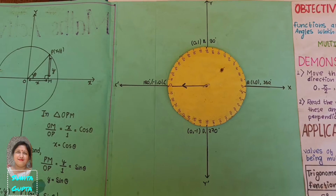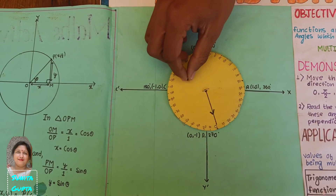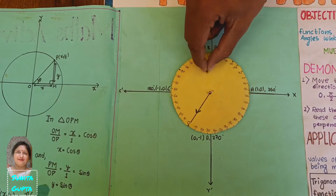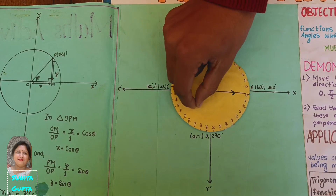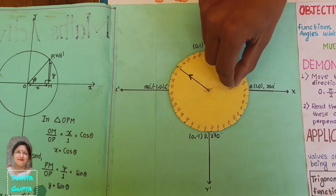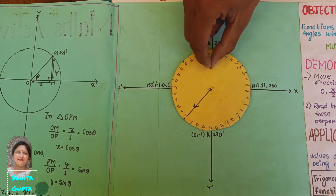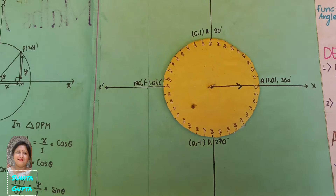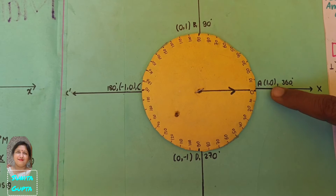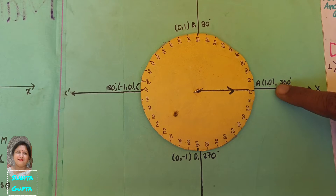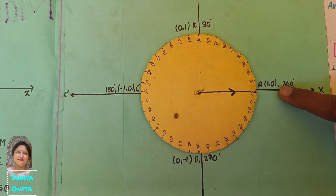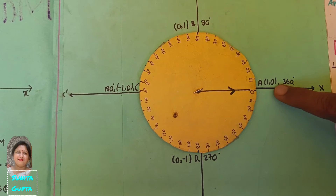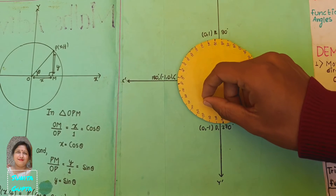Now let me move towards our model. The unit circle is taken on the XY plane, where the X-axis represents cos theta and the Y-axis represents sin theta. When we move to point A at 0 degrees, the X coordinate represents cos theta and the Y coordinate represents sin theta, which means sin 0° equals 0 and cos 0° equals 1.